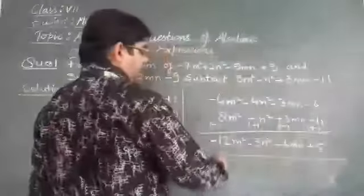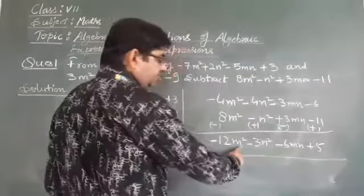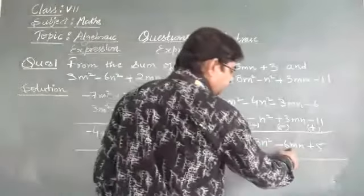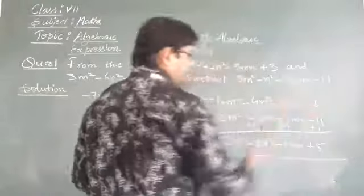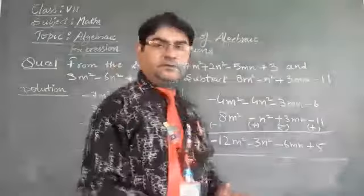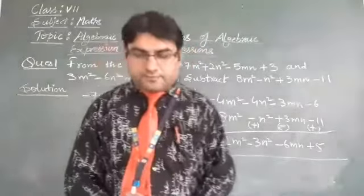So our answer is minus 12n square, minus 3n square, minus 6mn plus 5. So my dear students, I am sure that you understood this question. Thank you very much.